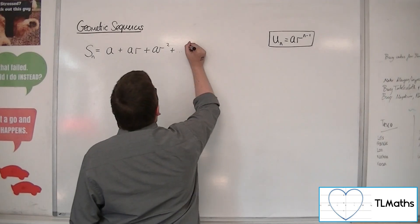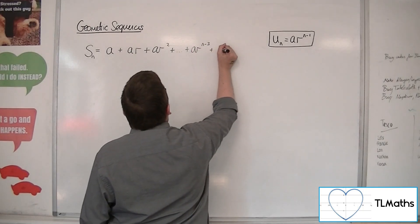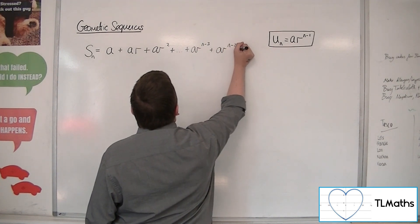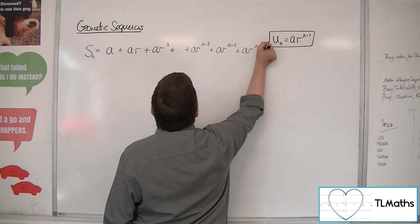So if I go up to ar to the n minus 3, the next term would be ar to the n minus 2, and the last term would be ar to the n minus 1.